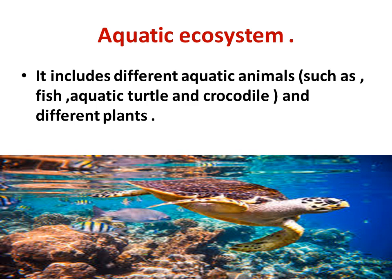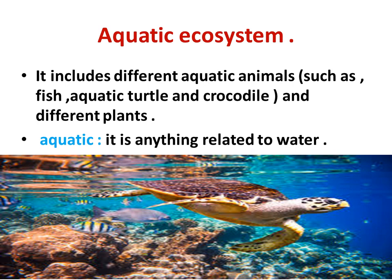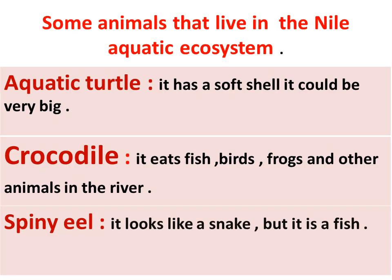The aquatic ecosystem includes different aquatic animals such as fish, aquatic turtle, and crocodile, and different aquatic plants. Aquatic means anything related to water. These are some animals that live in the Nile aquatic ecosystem.